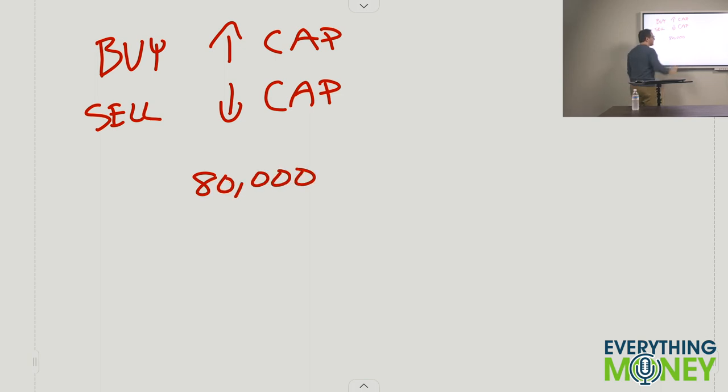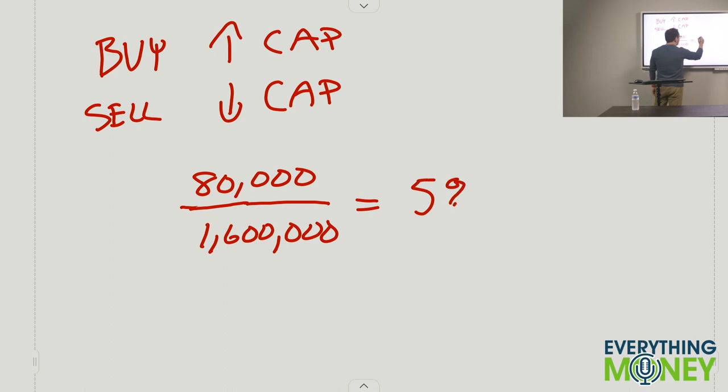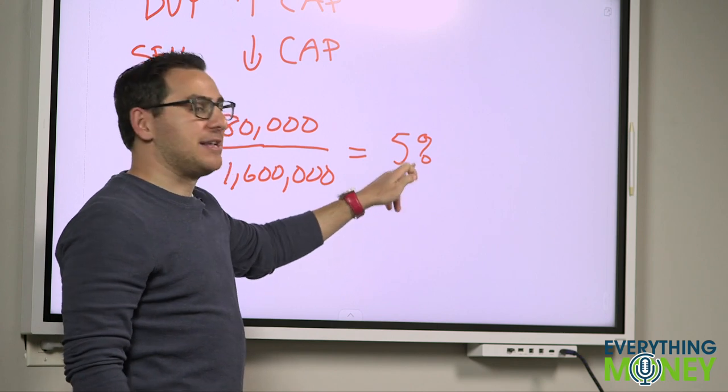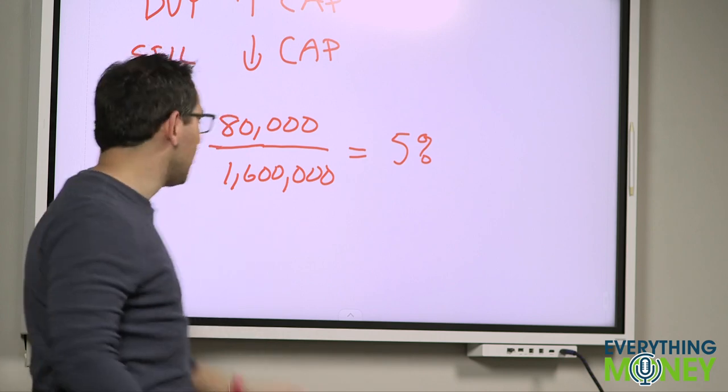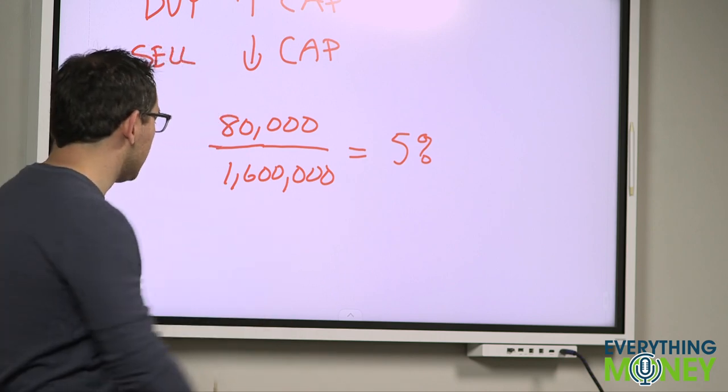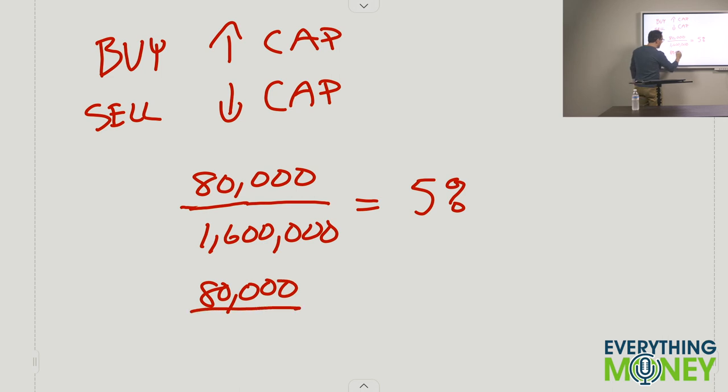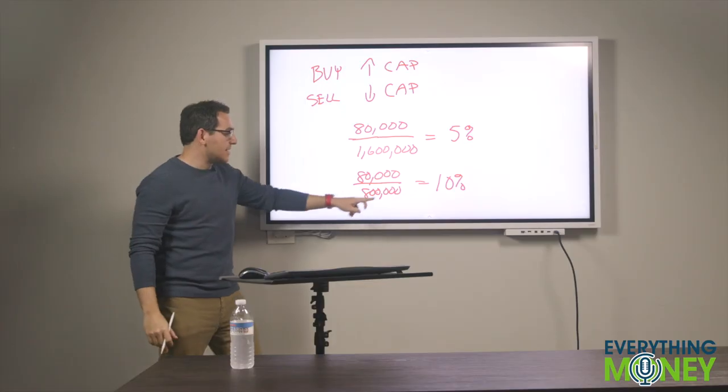Let's say that same property makes $80,000 a year. If you pay $1.6 million for it, you're getting a 5% cap rate, a 5% return. So if you remember that the cap rate is the return you get if you pay cash, the lower cap rate means a lower return. How do you get a lower return? By paying more money for it. If you take that same property and you pay $800,000 for it, you have a 10% cap rate or a 10% return, lower price, higher cap rate.